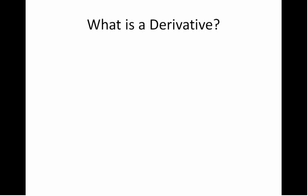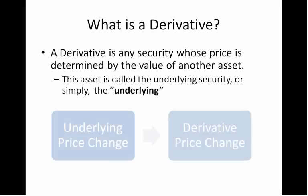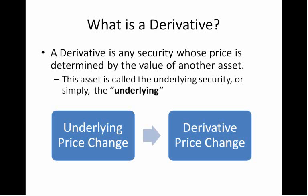Let's get started by understanding what is a derivative. A derivative is basically any security whose price is determined by the value of another asset. The second asset is called the underlying security, or simply the underlying for short. The price of the underlying will determine the price of the derivative. So when the price of the underlying security changes, the price of the derivative security will change as well. This is the single most important thing to take away from understanding derivatives — if you understand this, you'll understand generally how a derivative works.